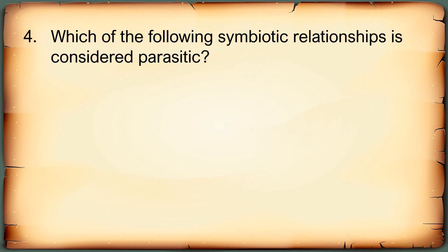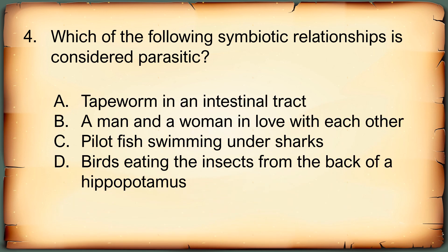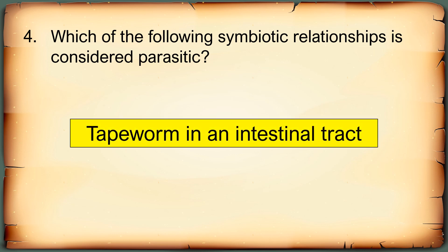Fourth question: Which of the following symbiotic relationships is considered parasitic? A. Tapeworm in an intestinal tract, B. A man and a woman in love with each other, C. Pilot fish swimming under sharks, or D. Birds eating insects from the back of the hippopotamus. Five seconds. Correct answer: A. Tapeworm in an intestinal tract.